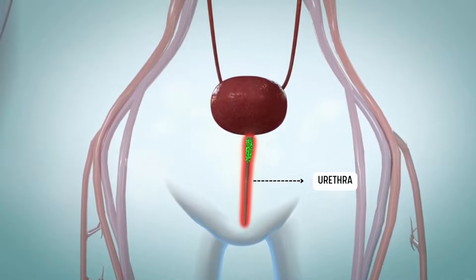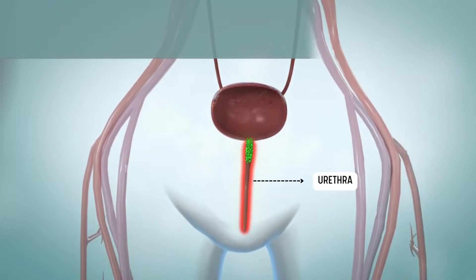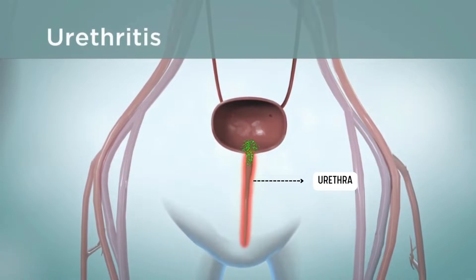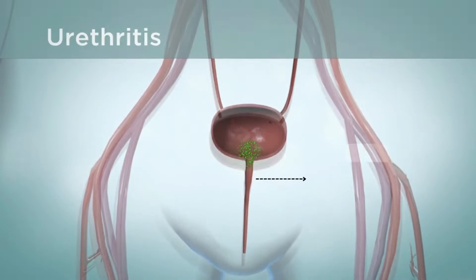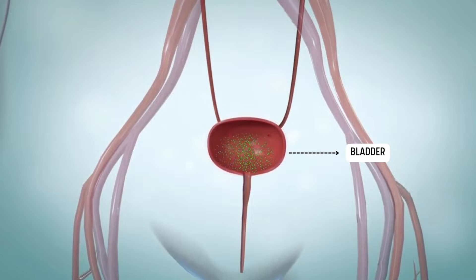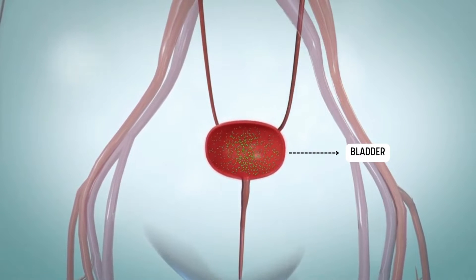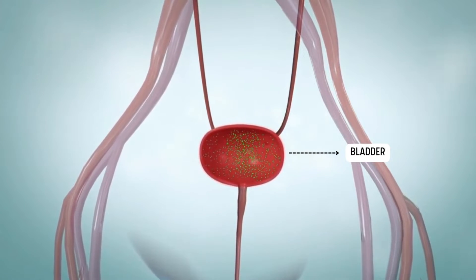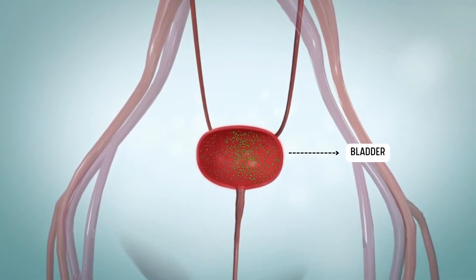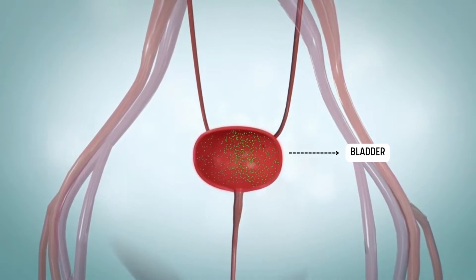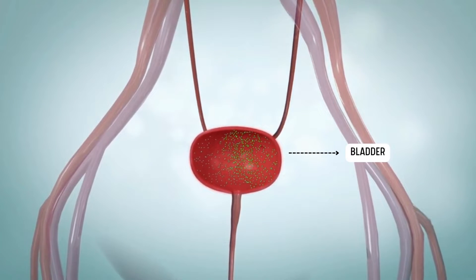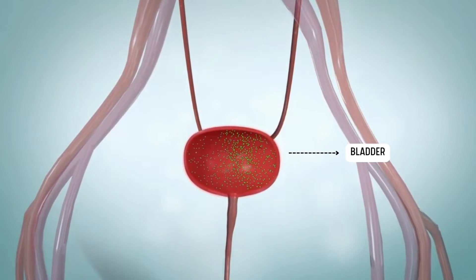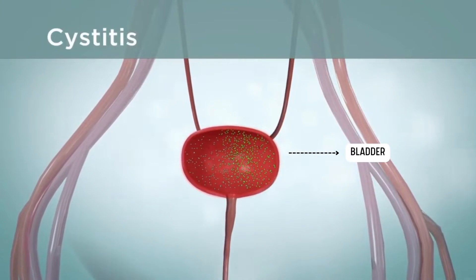If the urethra is infected, the UTI is called urethritis. The bacteria or viruses may move from your urethra to your bladder, where urine is stored before leaving your body. If a UTI stays in the bladder, it is called cystitis.